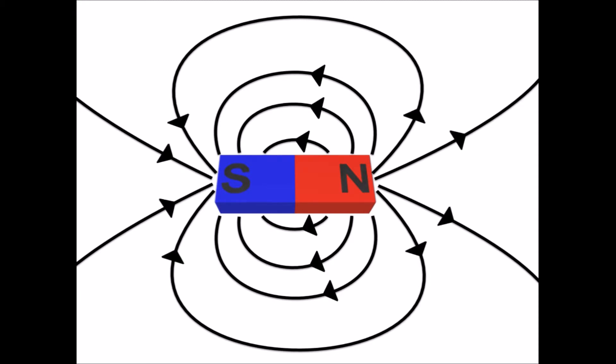Electric fields have a direction. They go from positive to negative charges. Magnetic fields are the same. They have a direction. We draw arrowheads on the field lines, and they go from north to south. Imagine the lines coming out of the north pole, curving around as shown, and finally entering the south pole.